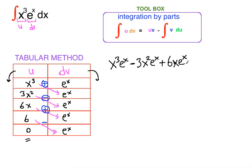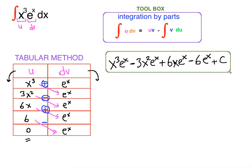The next sign is negative: 6 times e to the x gives negative 6 e to the x, plus C. This is how the tabular method is done. You can apply the tabular method when you can differentiate u down to 0, as in the table. Thank you for watching — see you in the next video.